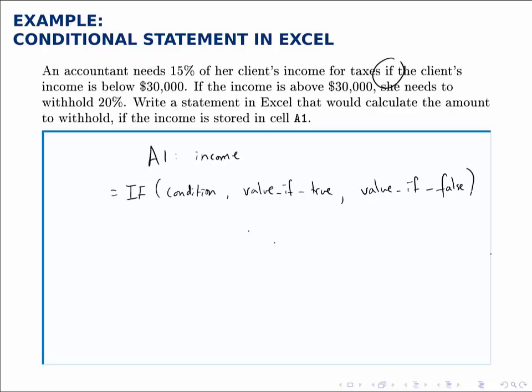The condition we're going to have here is the client's income being below $30,000. So here we'll say IF A1, the income, is less than 30000.